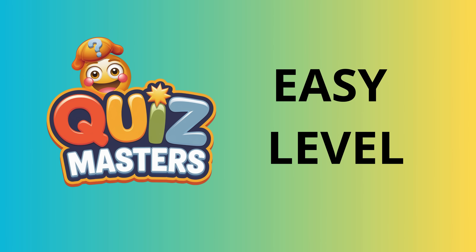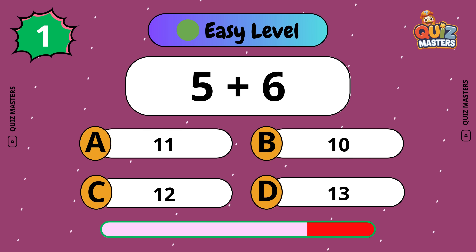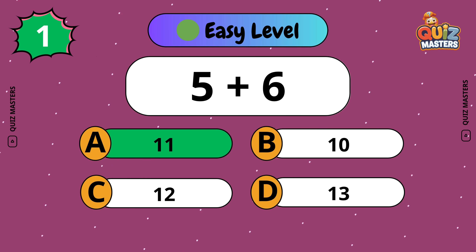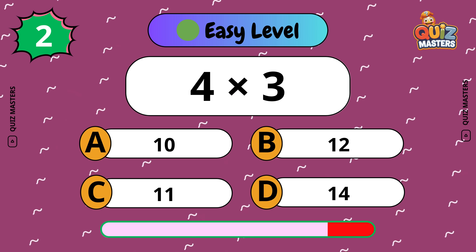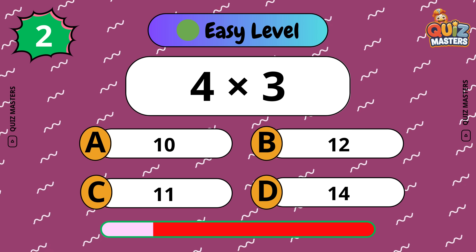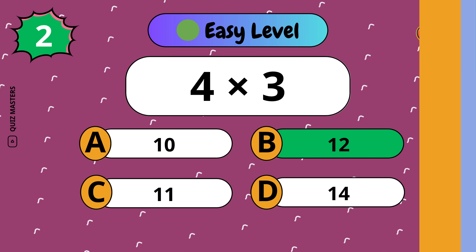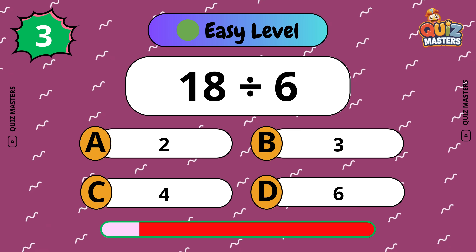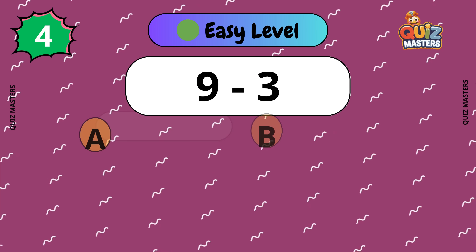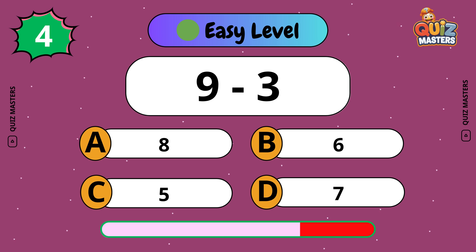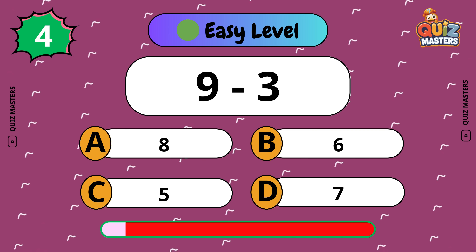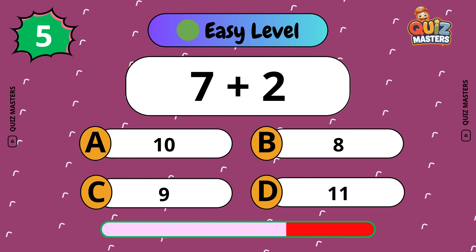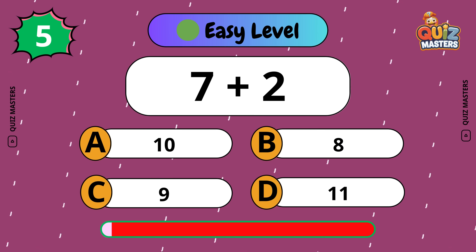Easy level. 5 plus 6. 11. 4 by 3. 12. 18 divided by 6. 3. 9 to 3. 6. 7 plus 2. 9.